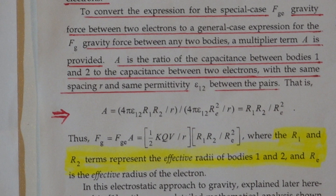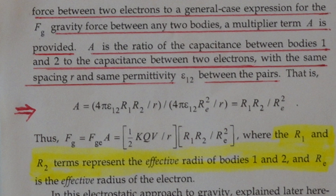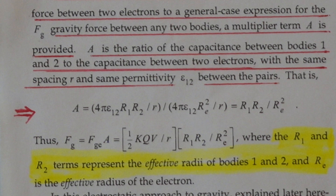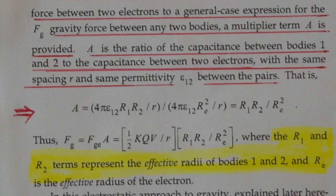A is the ratio of the capacitance between bodies one and two — two general massive bodies — to the capacitance between two electrons with the same spacing and the same permittivity of space between them. A is simply the ratio of two capacitances: the capacitance between two spheres of general mass, ratioed to the capacitance of two electrons with the same spacing. This is a problem. This equation for A is wrong — up to you to figure out why.